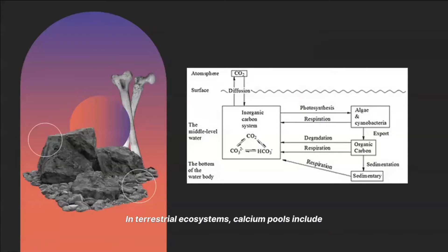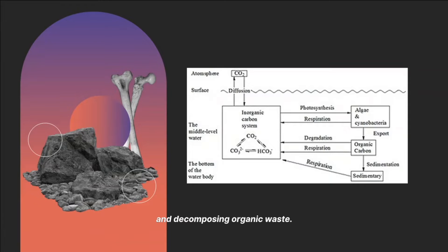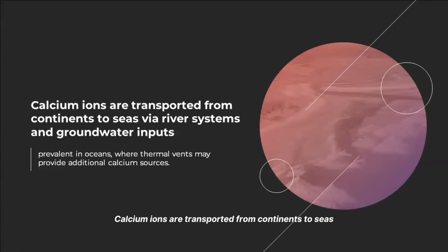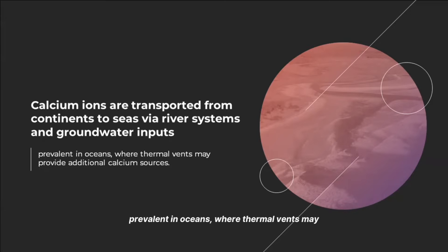In terrestrial ecosystems, calcium pools include reservoirs in soils, in soil minerals, organisms, and decomposing organic waste. Calcium ions are transported from continents to seas by river systems and groundwater inputs and are prevalent in oceans where thermal vents may provide additional calcium sources.